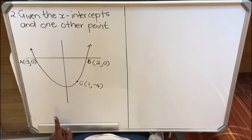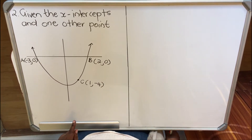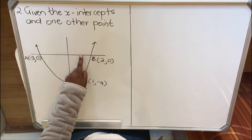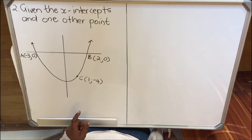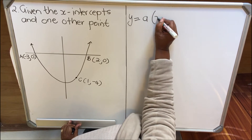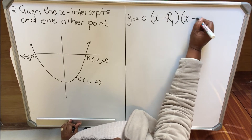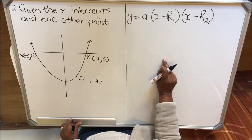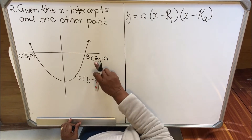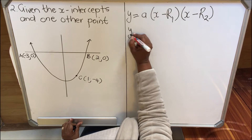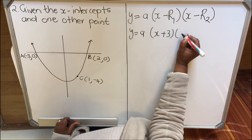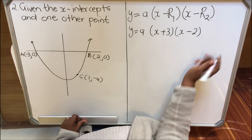The second one is when you are given the x-intercepts and one other point. The x-intercepts — sometimes they don't tell you, but you'll see where it cuts the x-axis because the y-coordinate is zero. You're going to use the formula y = a(x - r1)(x - r2). You substitute the x-intercepts: x minus -3 becomes x + 3, and the other intercept is positive, so it stays as x - 2.